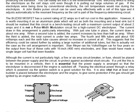The current draw in this arrangement of Stan Meyer's is particularly interesting. With one tube in place the current draw is about 1 amp. When a second tube is added the current increases by less than half an amp. When the third is added the total current is under 2 amps. The fourth and fifth tubes add about 100 milliamps each and the sixth tube causes almost no increase in current at all. This suggests that the efficiency could be raised further by adding a large number of additional tubes but this is not actually the case as the cell arrangement is important. Stan Meyer ran his Volkswagen car for four years on the output from four of these cells with 16 inch electrodes and Stan would have made a single larger cell if that had been feasible.